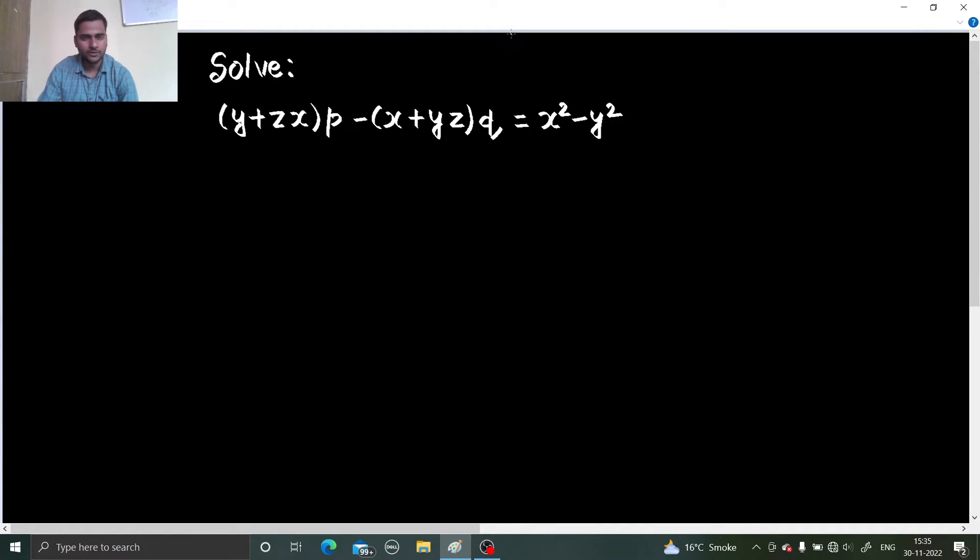So if you look at the question carefully, the degree of P and Q are 1. So this can be compared to our Lagrange's format which is PP plus QQ equals to R. Now if we compare, then we can see that this is your capital P, the one with small q is your capital Q and the other one is R.